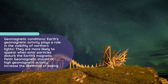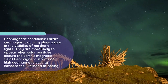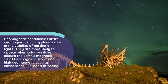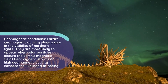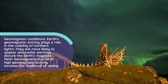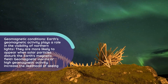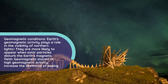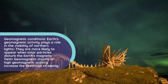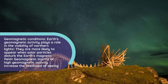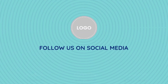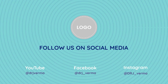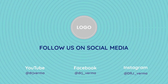Geomagnetic Conditions: Earth's geomagnetic activity plays a role in the visibility of Northern Lights. They are more likely to appear when solar particles disturb the Earth's magnetic field. Geomagnetic storms or high geomagnetic activity increase the likelihood of seeing Northern Lights.